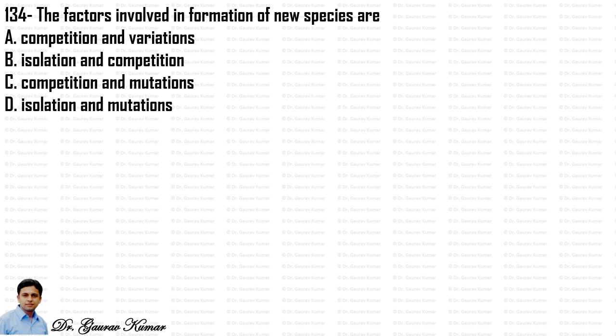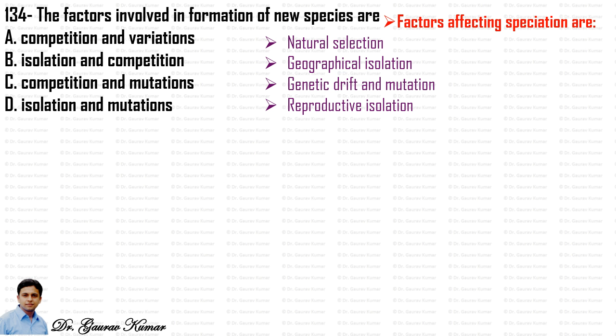Next question: the factors involved in the formation of new species are — natural selection, geographical isolation, genetic drift, mutation, and reproductive isolation. Among the options, the correct answer is option four: isolation and mutation.